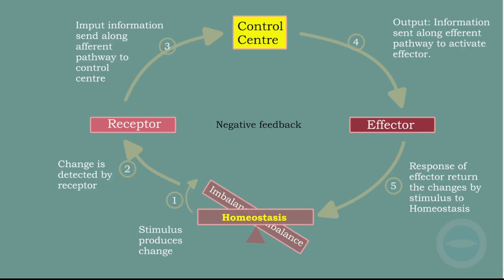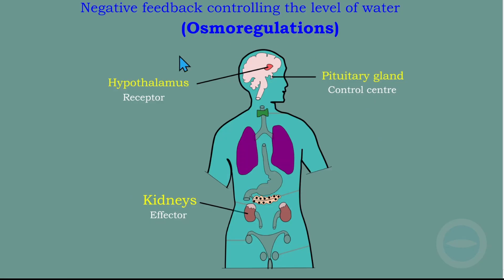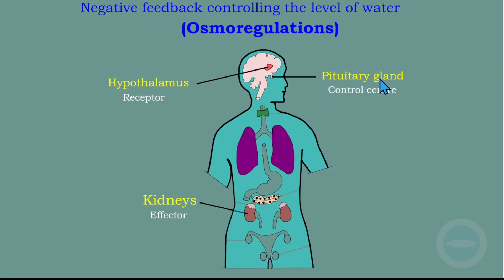Now let's see how osmoregulation works. In osmoregulation, three parts are responsible for maintaining water balance in our blood. The hypothalamus is the receptor — it detects the changes. The pituitary gland is the control center — it sends a message to the effector. The kidney is the effector. So the hypothalamus detects an imbalance in the water level in our blood, then sends a message to the pituitary gland to either release more ADH or stop releasing ADH.